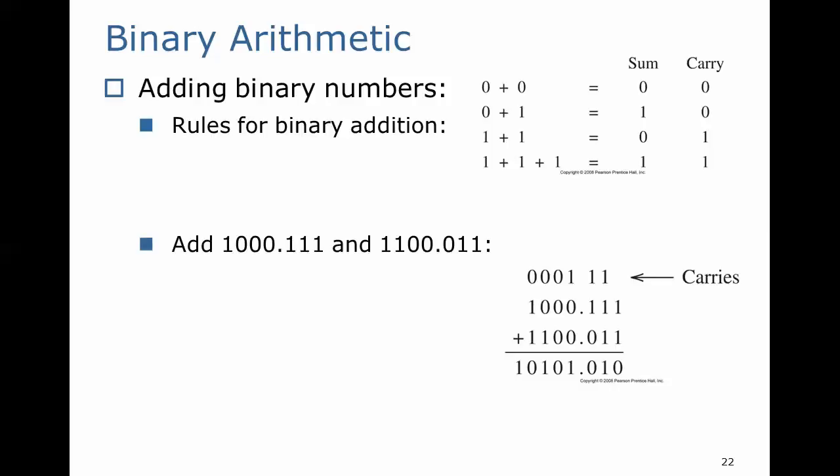Let's add 1000.111 and 1100.011. We line up the corresponding place value for each number, and we just add them starting from the right. This is just like regular arithmetic, but the thing we have to remember is whenever we do a 1 plus 1, we don't get 2. We get 0 with a carry of 1.